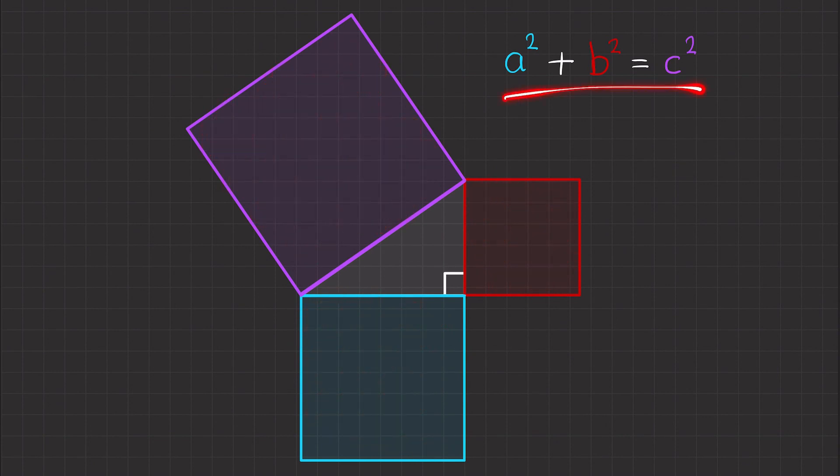So that's what this formula means. And using this information, we can figure out the side lengths using only two of the sides of a right-angled triangle.